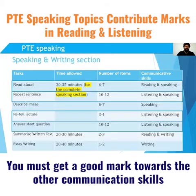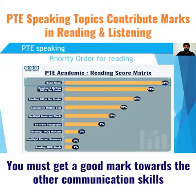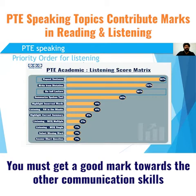If we have a look at our speaking and writing section, we have got these four topics highlighted: read aloud, repeat sentence, retell a lecture, and answer short question — these are also contributing towards reading and listening scores. Towards reading, it's about 28%, which is quite significant, and for repeat sentence and retell a lecture towards listening, it is 26% and 20%, which is quite significant.